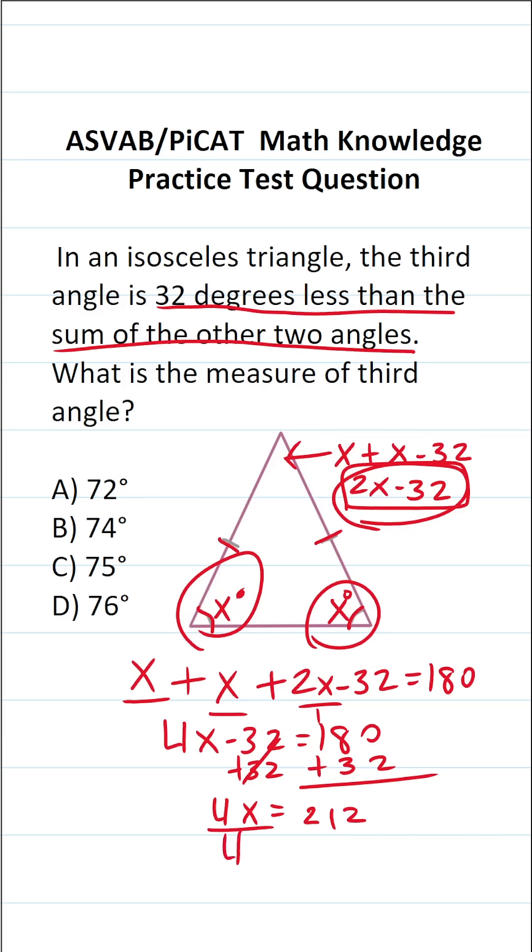To get x by itself, we're going to divide both sides of the equation by 4. This crosses out. This says x equals 212 divided by 4. 4 goes into 21 five times without going over, given that 4 times 5 is 20. 21 minus 20 is 1. Drop down this 2. 4 times 3 is exactly 12 with no remainder. So we can see x is 53 degrees.